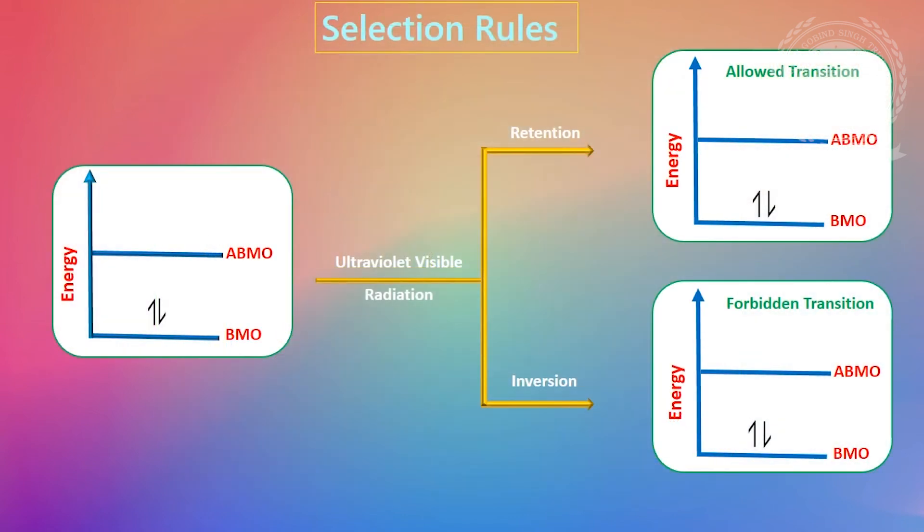Next, selection rules. We know that when an organic molecule absorbs ultraviolet or visible radiation, an electronic transition takes place between the lower and higher energy electronic levels. The electronic transitions are governed by certain quantum mechanical restrictions called selection rules. Selection rules determine the probability of electronic transition. Electronic transitions with retention of spin of electrons are allowed, with inversion of spin of electrons are forbidden. Electronic transitions with retention of multiplicity are allowed, with change in the multiplicity are forbidden.